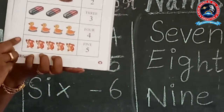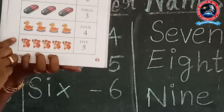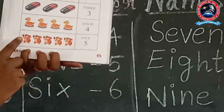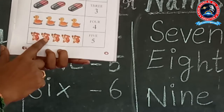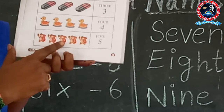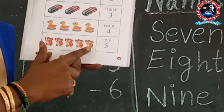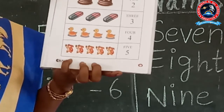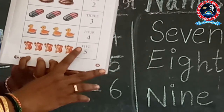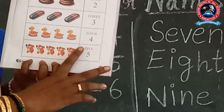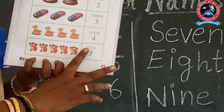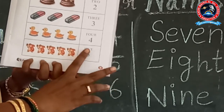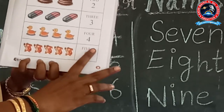Now you are going to count the squirrels. How many squirrels are there? 1, 2, 3, 4, 5 — so 5 squirrels are there. Tell me the number name of 5: F-I-V-E, 5. Repeat again: F-I-V-E, 5.